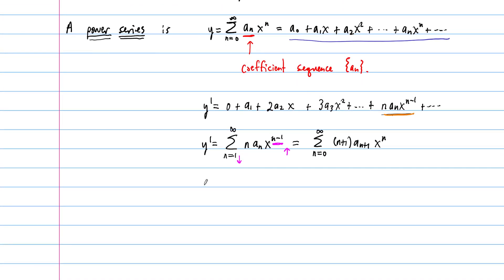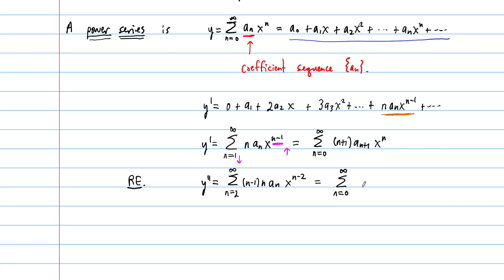It turns out Y double prime — and this is a recommended exercise — can be written as the sum from n equals 2 to infinity of (n−1)·n·a sub n·x to the n minus 2. This can be shifted to become the sum from n equals 0 to infinity of (n+2)(n+1)·a sub n+2·x to the n.